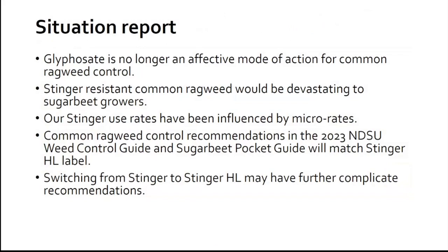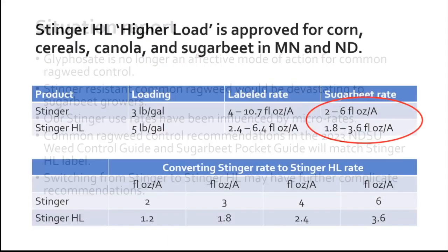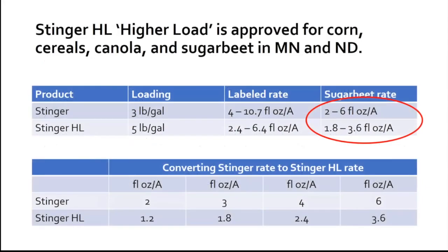Our Stinger use rates have been influenced by micro rates historically because it would otherwise cause injury to sugar beets. Common ragweed control recommendations are in the 2023 NDSU Weed Control Guide and Sugar Beet Pocket Guide, and they will match the Stinger HL label. Switching from Stinger to Stinger HL may further complicate recommendations because of the conversion factor. The old formulation's 2 fluid ounce rate converts to 1.2 fluid ounces of Stinger HL, and the sugar beet rate of 2 to 6 fluid ounces of the old formulation becomes 1.8 to 3.6 fluid ounces of Stinger HL.